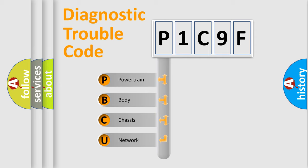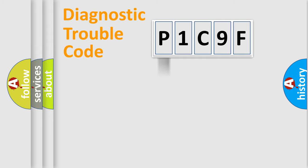We divide the electric system of automobile into the four basic units: Powertrain, Body, Chassis, and Network.